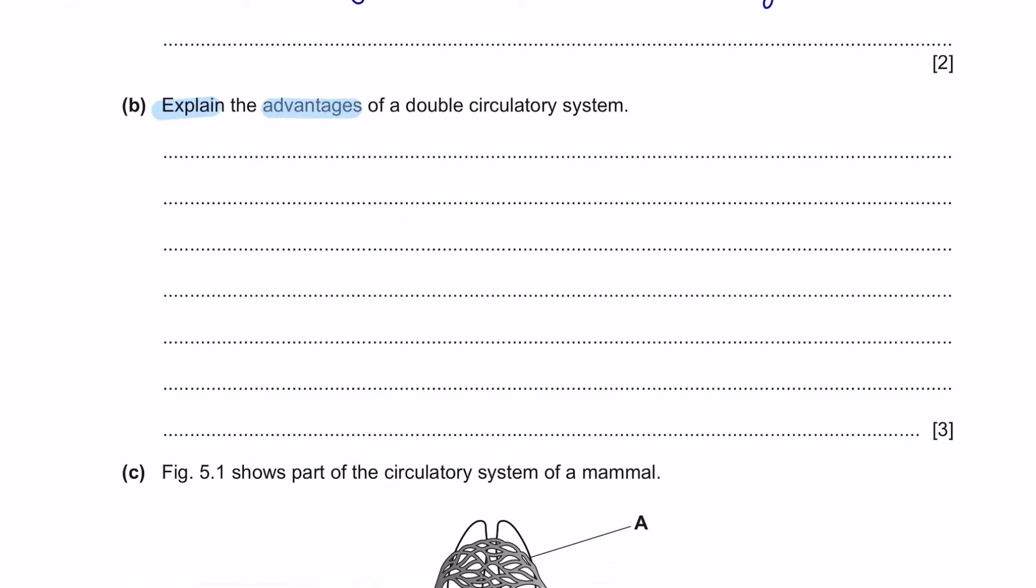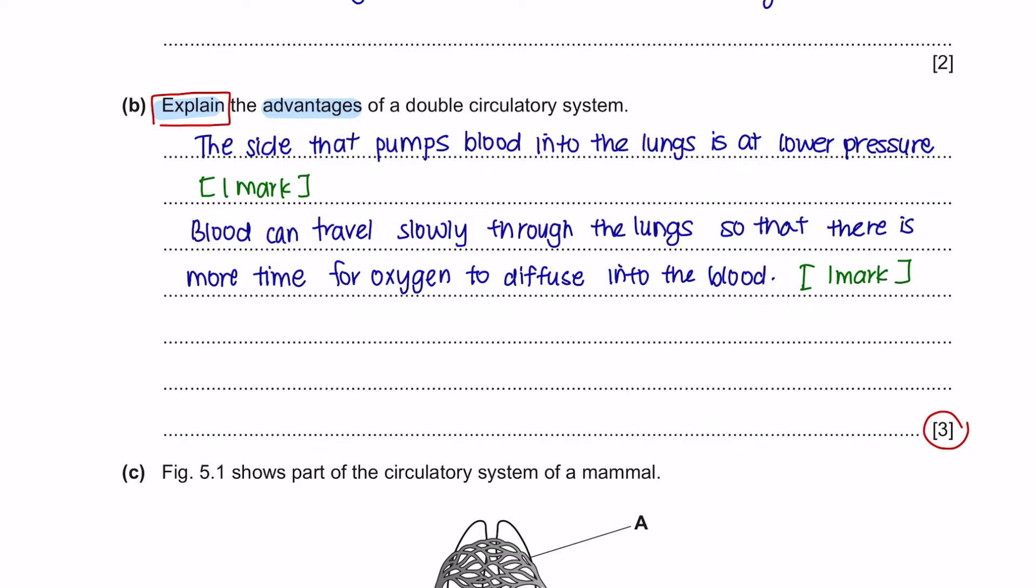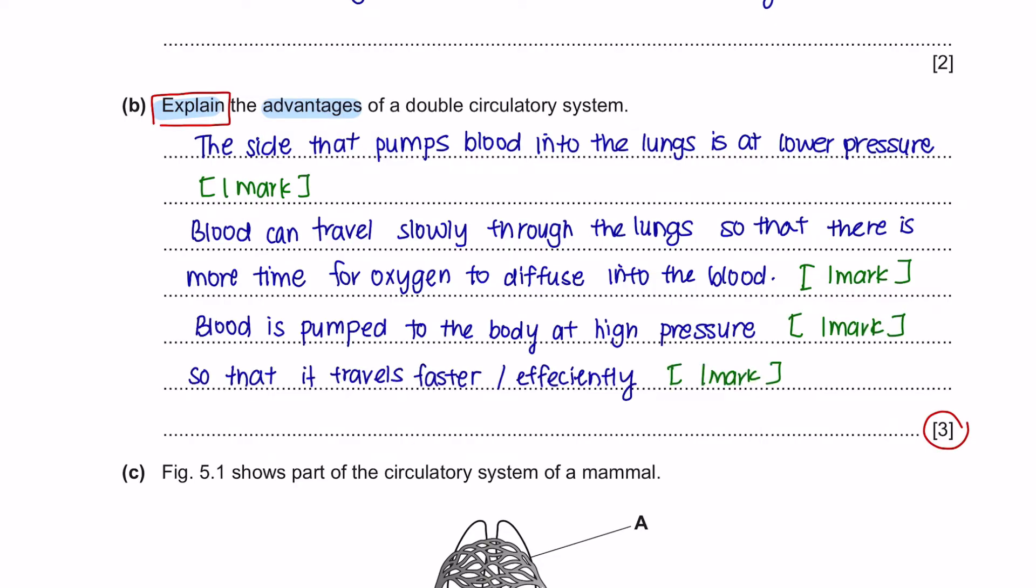Question B. Explain the advantages of a double circulatory system. They have given you three marks. The command word is explain. Explain questions need greater detail compared to describe or state questions. The double pumping system of the heart means that one side can pump at a lower pressure than the other. The side that pumps blood to the lungs is at a lower pressure. Therefore, blood can travel slowly here and ensure there is time for oxygen to diffuse into the blood. The other side of the heart pumps the blood at a much higher pressure to the body. Another advantage is that there is no mixing of oxygenated and deoxygenated blood. Always pay attention to your command word and the number of marks given.